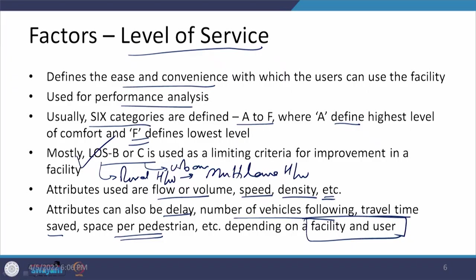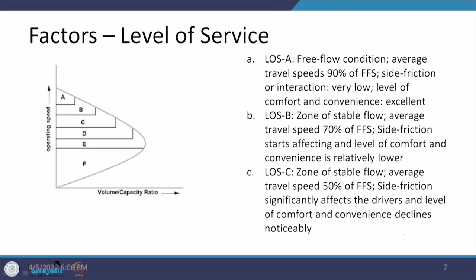We need to understand that when designing a facility, we try to ensure it operates at LOS B or C. When looking at level of service from A to F, differentiation is based on flow conditions, speeds, side frictions, and driver discomfort. LOS A defines free flow condition — all vehicles move at desired speed with no interaction between them. Speeds are considered at 90 percent of the free flow speed. Side frictions are very low since vehicles maintain good longitudinal and transverse gaps, creating good comfort and convenience.